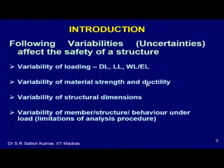We need to define up to what level of strength variability the steel is acceptable. Quality control tests are carried out in steel plants but the final steel produced always has some variability. Similarly, we have variability in structural dimensions — we may assume a plate thickness of 10 mm but it may be 9.99 or 10.02 mm. Another important variability is that the analysis method we use is always approximate, because we want to keep analysis simple, so some effects like stress concentration are not captured.